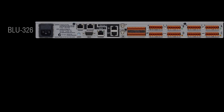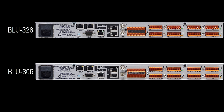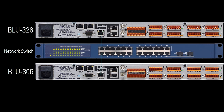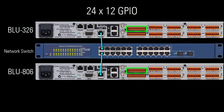Now, let's say you have a two-device system consisting of a Blue 326 and a Blue 806. As long as the Ethernet control network is intact, this means you have a unified 24 by 12 GPIO system. In other words, any of the 24 GPI can be used to control any parameter regardless of where the parameter physically lives, and likewise, any of the 12 GPO can also be controlled by any parameter anywhere in the system.